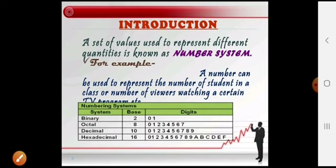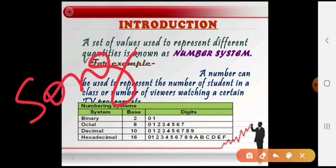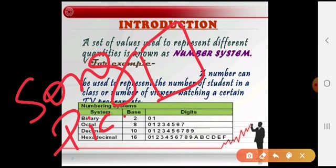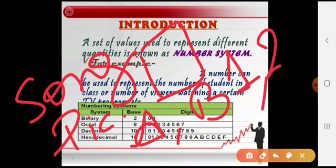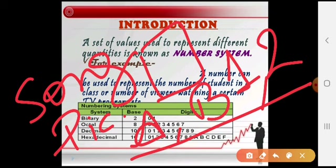Most of the digital computers represent all kinds of data and information in binary numbers. This can include any audio — it can be any song — video, picture, image, graphics, text, or numbers. So these all come in the form of data and information. But when they go to the computer for execution, they are always converted into the form of binary.